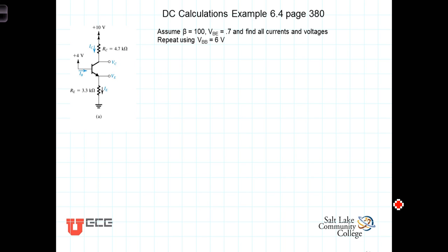Let's work through an example to demonstrate how we analyze circuits involving bipolar transistors. The collector is tied through a resistor R_C to a 10-volt source. The base is tied directly to a 4-volt source, and the emitter is lifted off ground by a 3.3 kilohm resistor. Beta is equal to 100, and we assume the base-to-emitter voltage, if conducting, is 0.7 volts. Let's calculate all the voltages and currents we can.